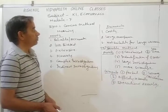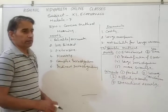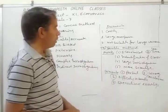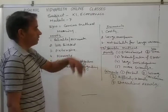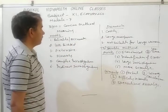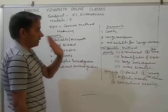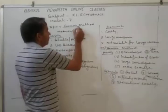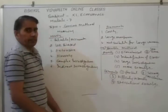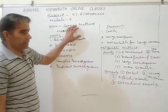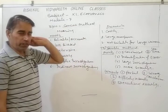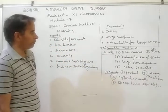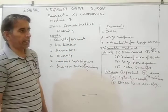Hello students. In the last module we discussed about the sample method and census method. These are the two approaches of collecting data or information. One concept is census and the second is sample, also called census method and sample method. Last day we discussed their meanings. Census method means when all units of a universe or population are counted, that method is called census method.